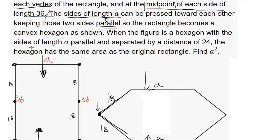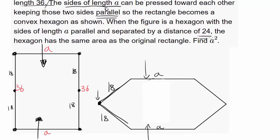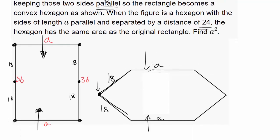When the figure is a hexagon with the side length A parallel and separated by distance of 24. So that's telling us the parallel sides with length A are separated by distance of 24. So you know this perpendicular distance. Distance is always perpendicular when you're talking about two lines of 24.